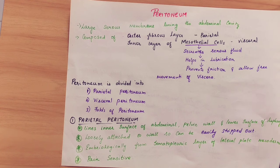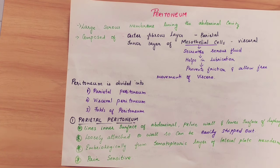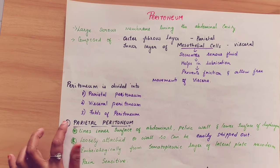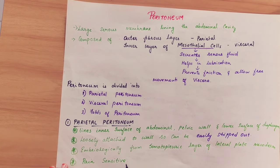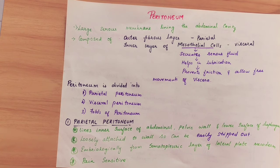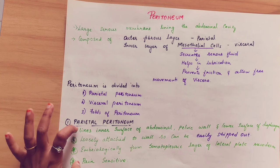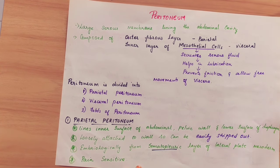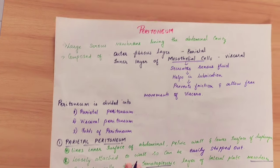Embryologically, the parietal peritoneum is derived from the somatopleuric layer of the lateral plate of mesoderm. In embryology, the germ layers are ectoderm, mesoderm, and endoderm. Within the mesoderm there are lateral plates: the somatopleuric layer and the splanchnopleuric layer. The parietal peritoneum develops from the somatopleuric layer. It is pain sensitive, so any damage to this layer can be felt as pain.